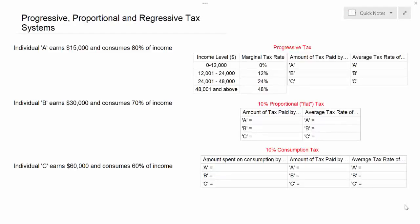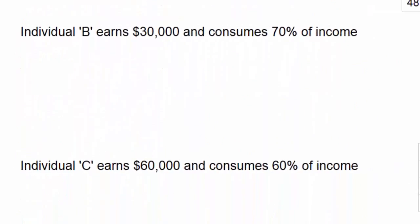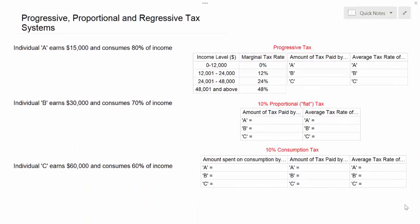This video lecture is going to explore the differences between progressive, proportional, and regressive taxation systems. We're going to learn how to calculate the effects of different types of tax systems on three individuals whose incomes range from $15,000 to $60,000 per year. In the end, we're going to discuss and analyze, using the Lorenz curve, the varying impacts of these three types of taxes on the level of income distribution in a country.